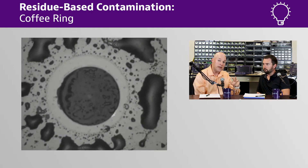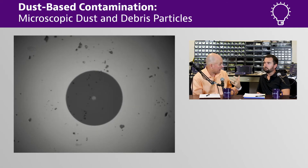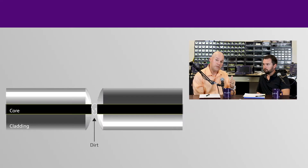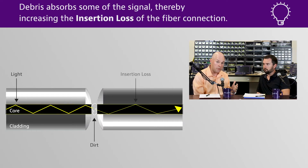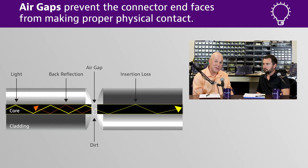With dust-based contamination, a couple of things can happen. Depending on the placement of the dust, you may have a signal actually being absorbed into the material. It can also cause back reflection — back-scattered signal returning into the incoming fiber, which causes problems. And depending on the size of the dust particle, if it's large enough, you could have problems with the connectors mating correctly.